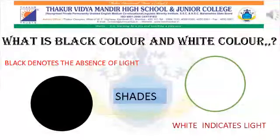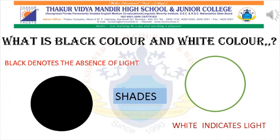Students, now tell me — what is black and white? Black and white are not regarded as colors. White indicates light while black denotes the absence of light. However, in everyday life, they are referred to as white and black colors for the sake of convenience.